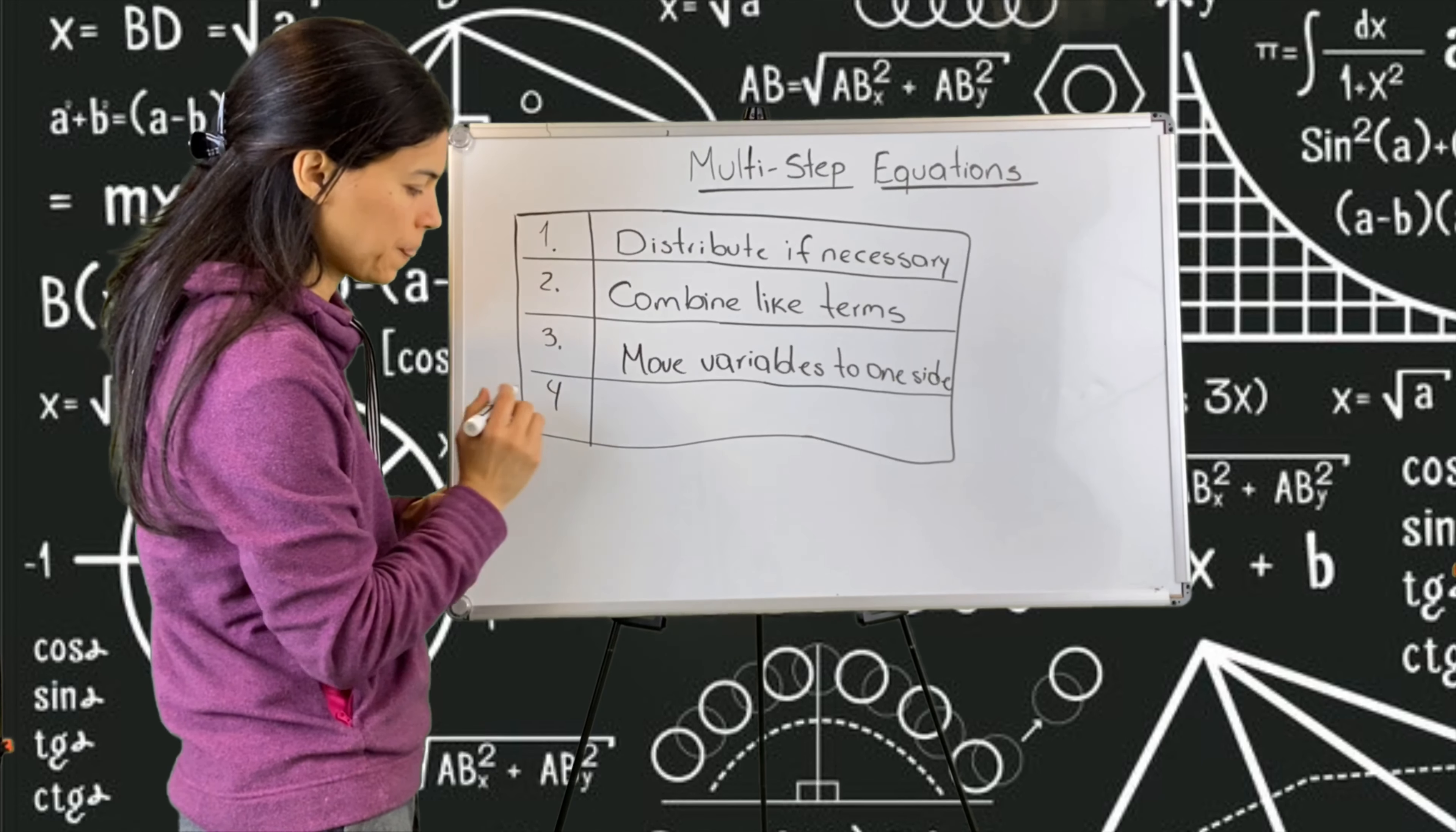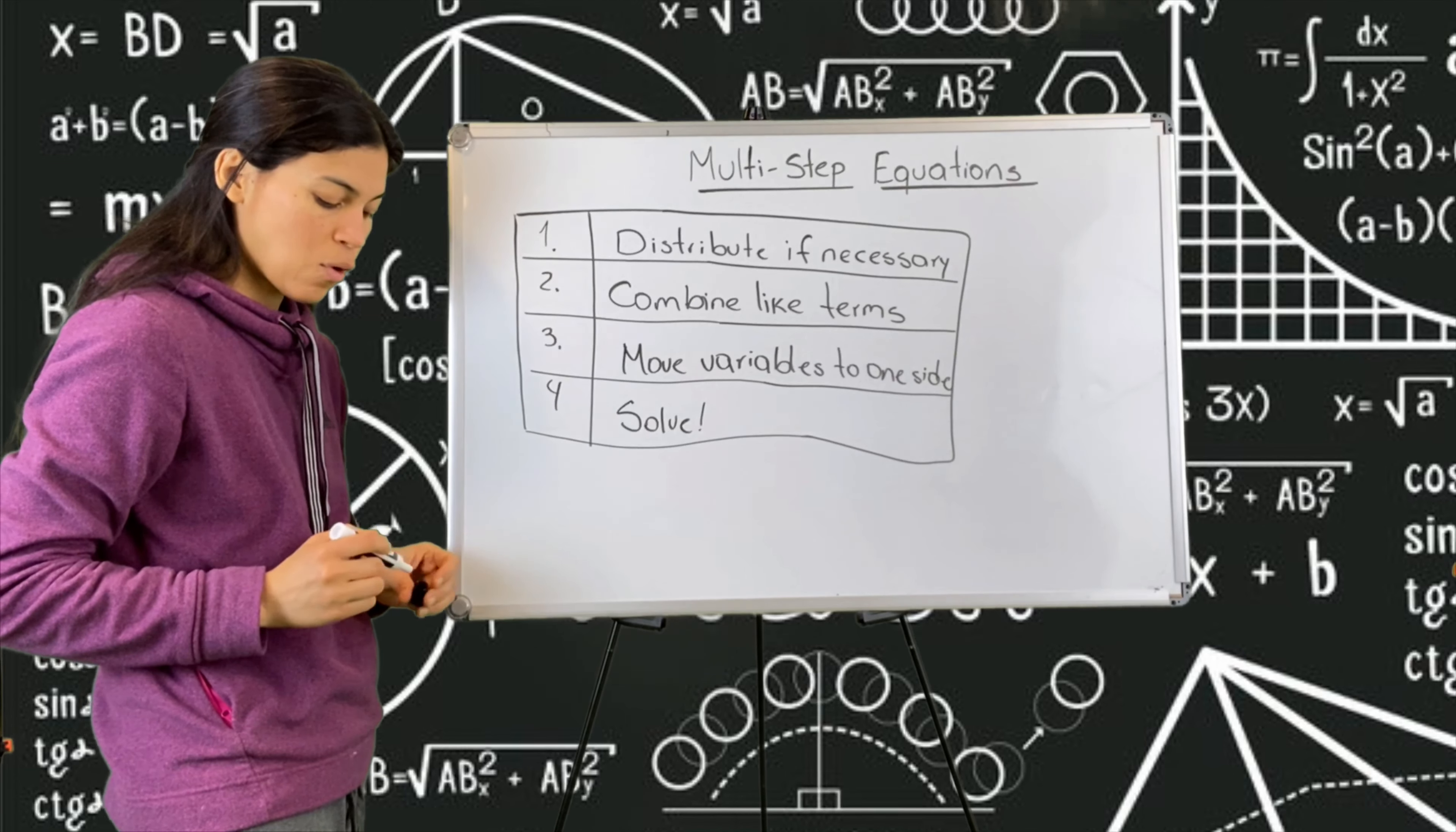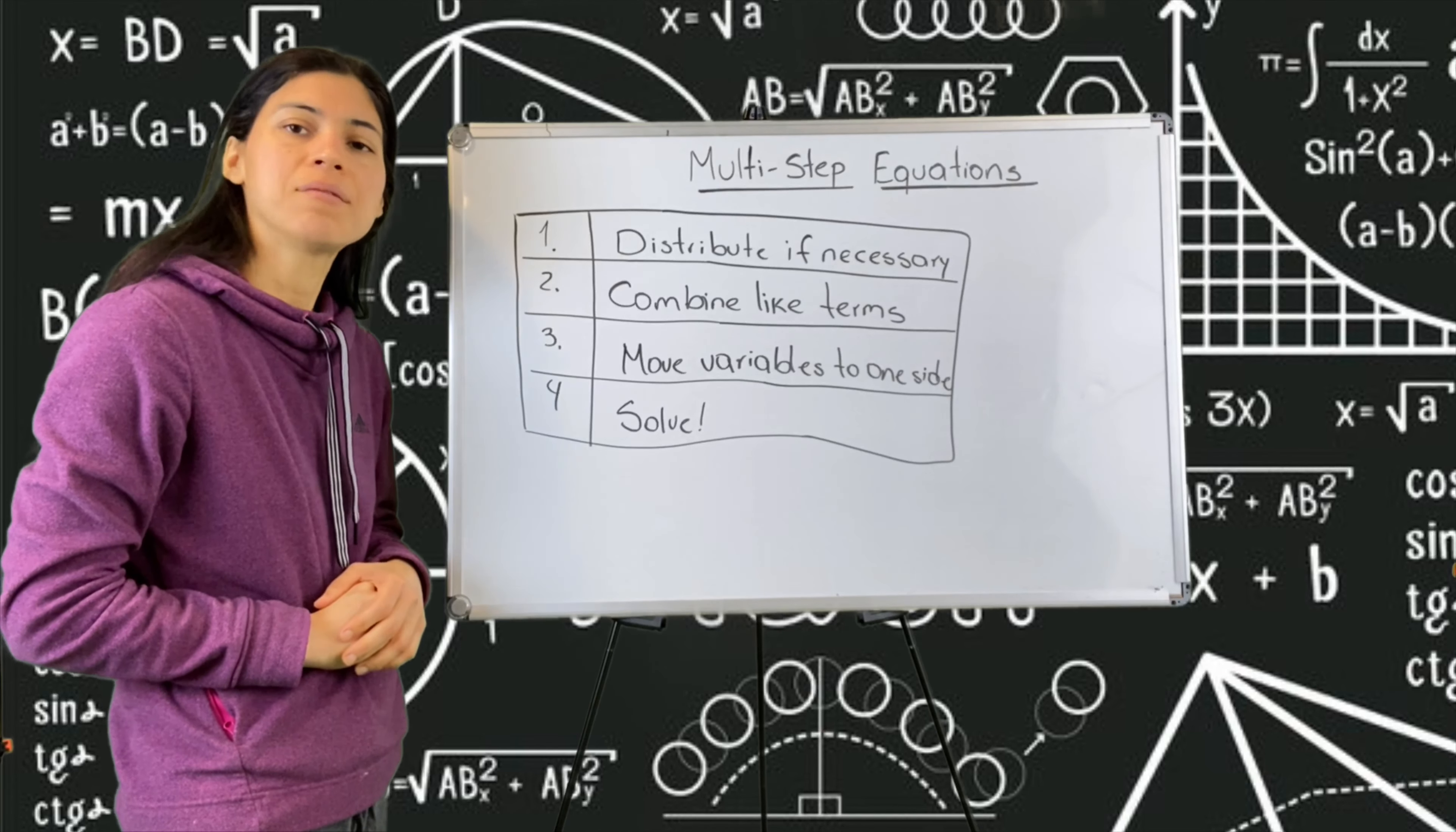And the fourth step is solve. How we solve? We undo the operations, right? We use the opposite, the inverse operation. If we have addition, we subtract. If we have multiplication, we divide and vice versa.